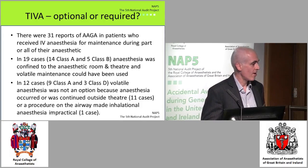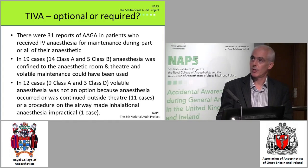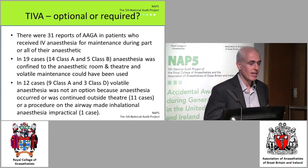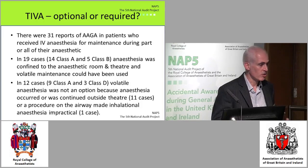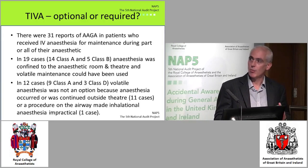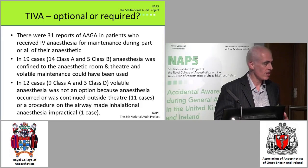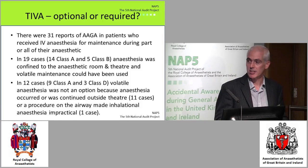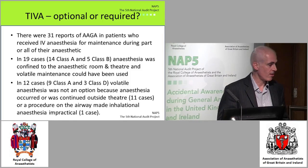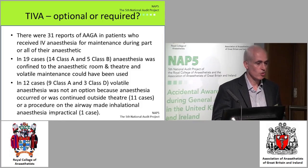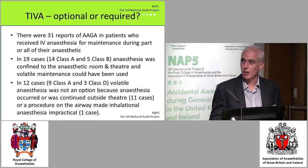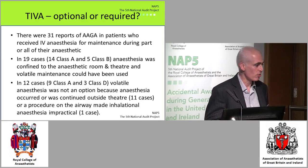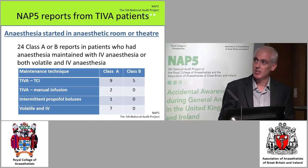If we look at the NAP5 results, there were 31 reports of accidental awareness in patients who received intravenous anaesthesia maintenance at some point during their anaesthetic — 28 Class A or B reports and three of the ICU reports. In 12 of these cases, volatile anaesthesia was not an option, either because anaesthesia was given in an area without vaporisers or because surgery was in the airway. So about 40% of cases couldn't have a volatile anaesthetic — there may not be a choice, and all anaesthetists need to be able to give an intravenous anaesthetic.